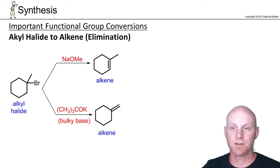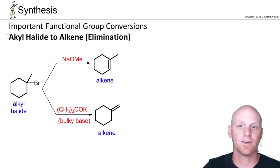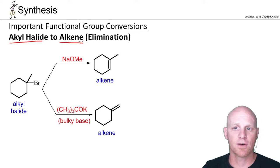The next functional group conversion, we'll build off the last one. We'll start with the alkyl halide and convert it into an alkene. You might recall that your halogens are your most common leaving groups.